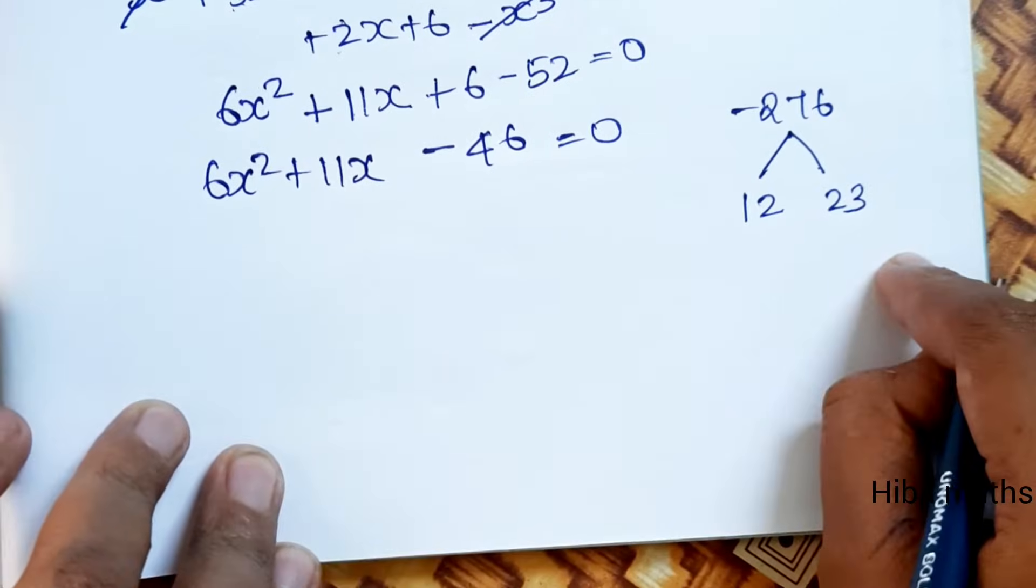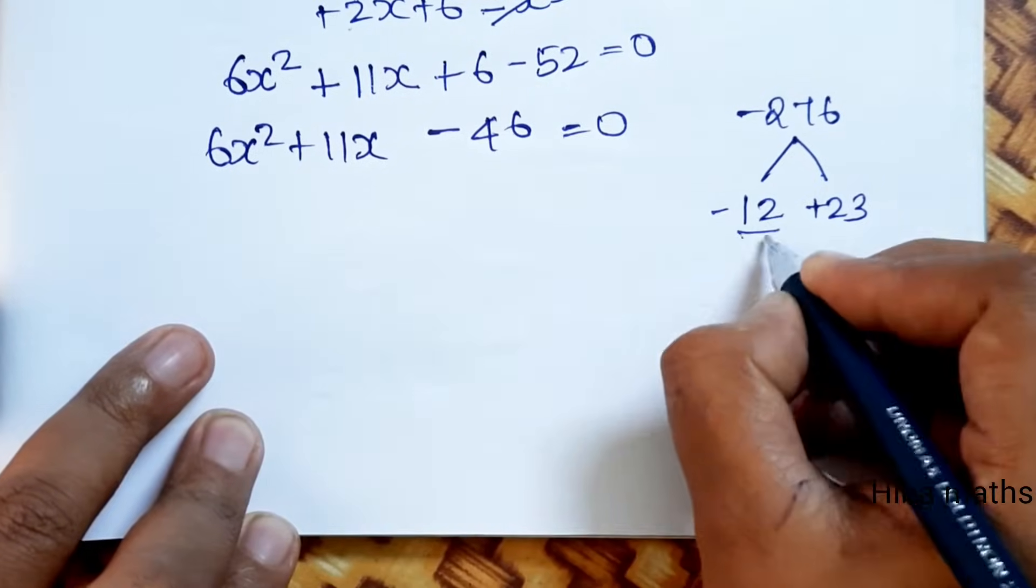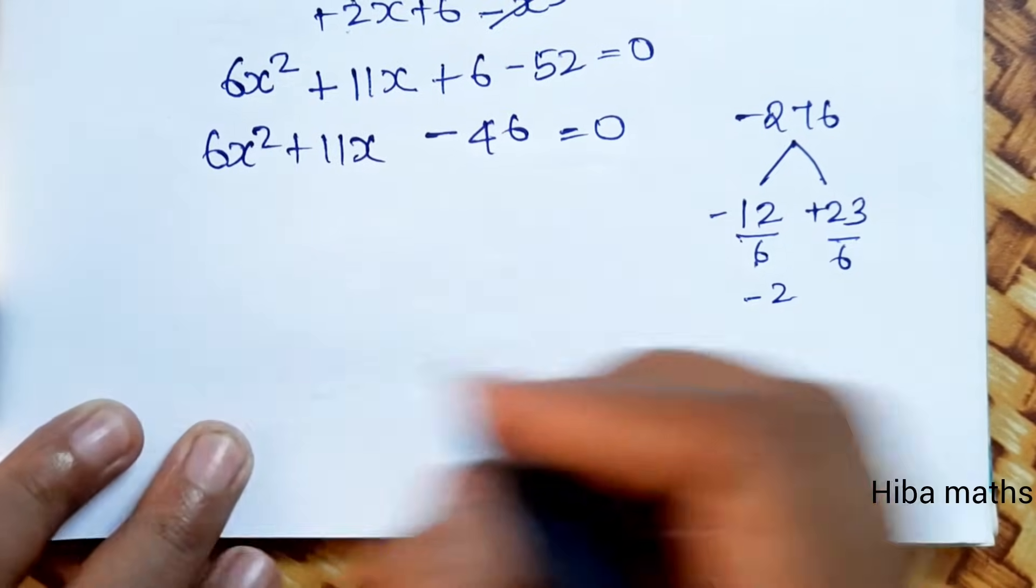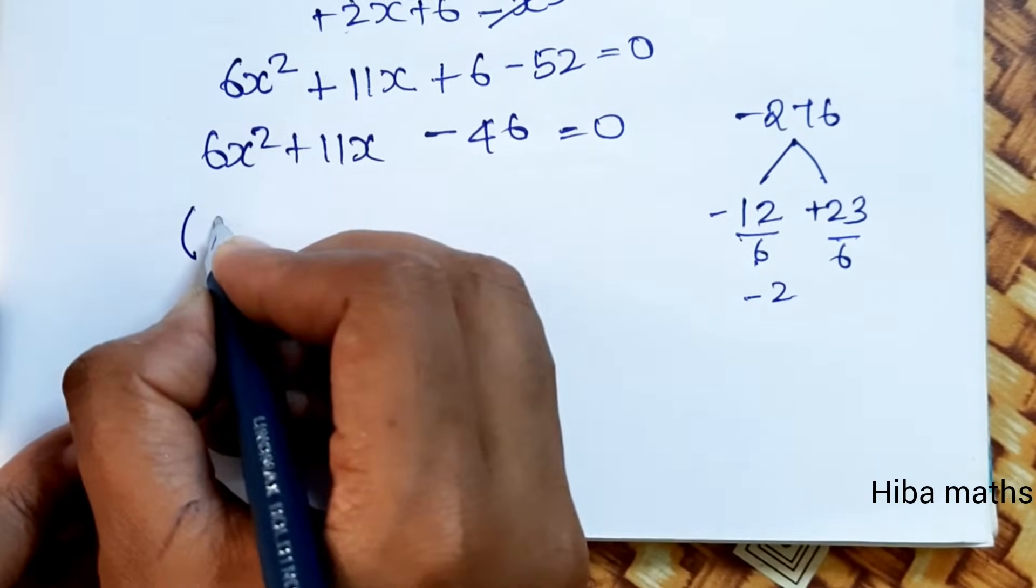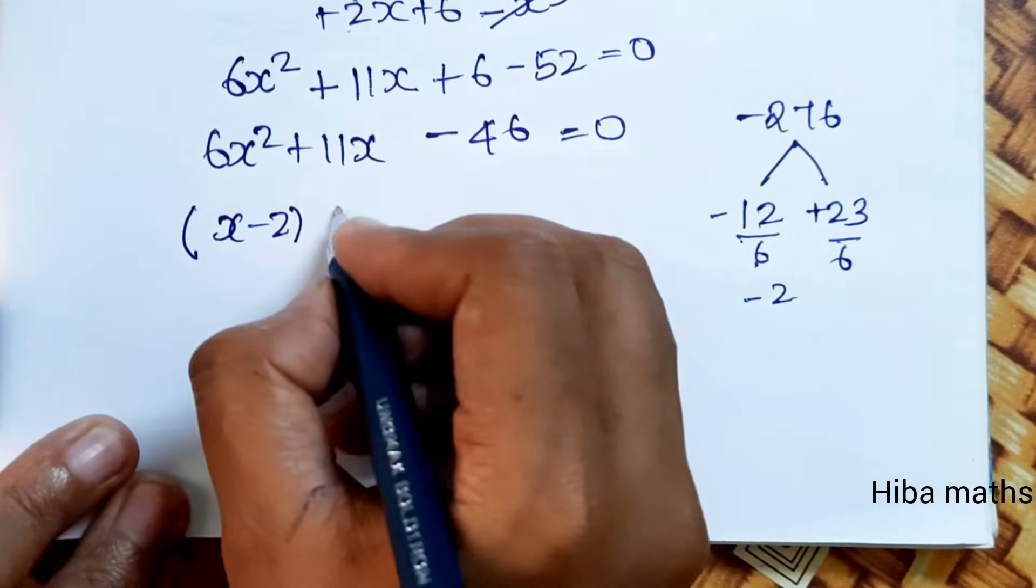So it is like 12, 23. Plus is equal to plus, minus is equal to minus. So it is plus minus. 6 all multiple is equal to 6 all divide. So it is minus 2, 23 by 6.